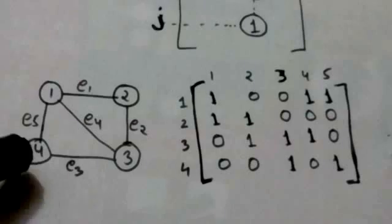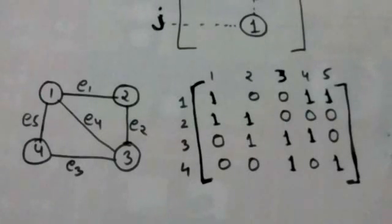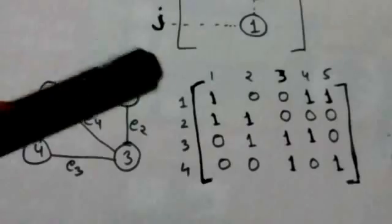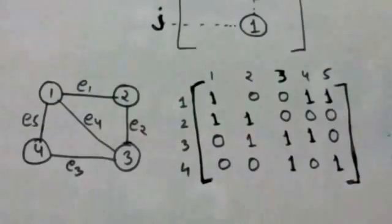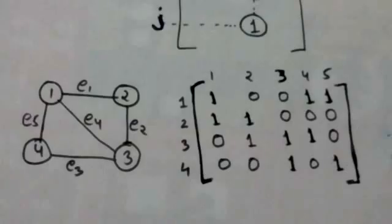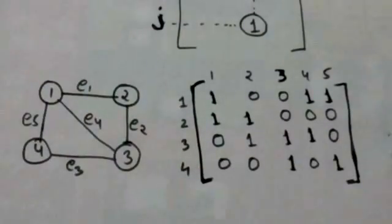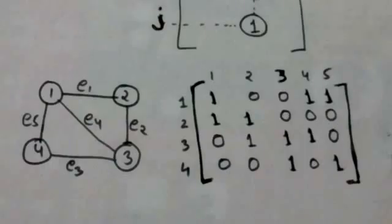Now, in this graph edge E5 joins vertex 1 and vertex 4. Therefore, in the incidence matrix the entry at the first row and fifth column and the entry at the fourth row and fifth column are both one, and all other entries of the fifth column are zero.